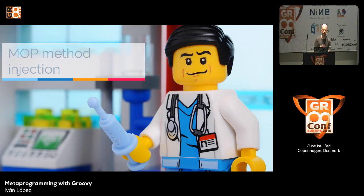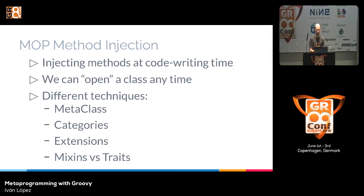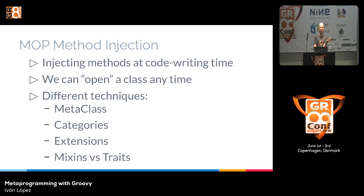Let's start with the first technique: MOP injection, or method injection. We're going to add new methods or new behavior dynamically and change the behavior of our code. With these techniques, we know the names of the new methods we want to add at code-writing time. We can always open any class because Groovy doesn't care too much if it's a Java class or final — dispatch is always done through the MOP layer. The techniques are: meta-class, categories, extensions, and mixins versus traits.